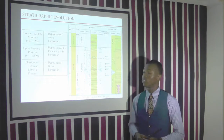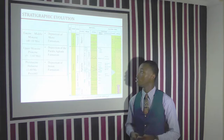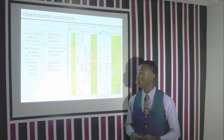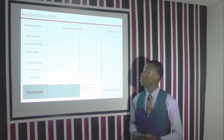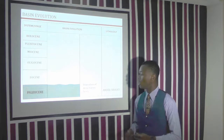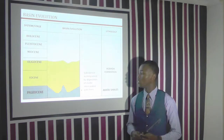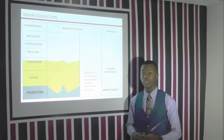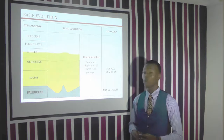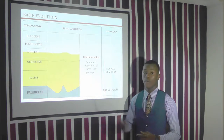The stratigraphic evolution of the Niger Delta is divided under three main formations: the Akata Formation, the Agbada Formation, and the Benin Formation. The basin evolution began in the Paleocene with the deposition of Akata shales, which are deep marine facies, closely followed by the subsidence and deposition of clastic sands with interbedded fines, which is the Agbada Formation. After the Agbada Formation, continuous deposition of sand packages occurred.